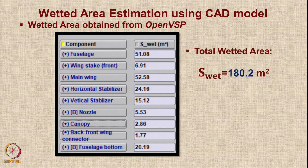The wetted area of each component as calculated by OpenVSP is shown, and the total wetted area adds up to 180.2 square meters.